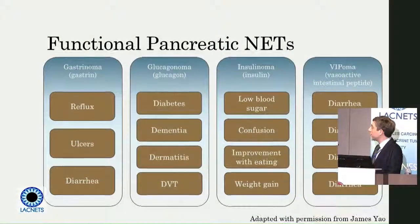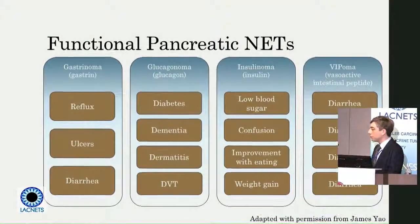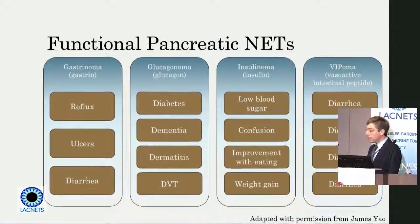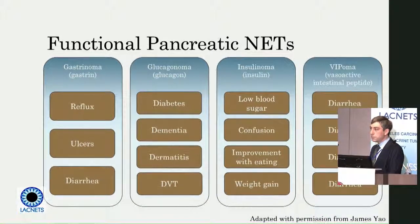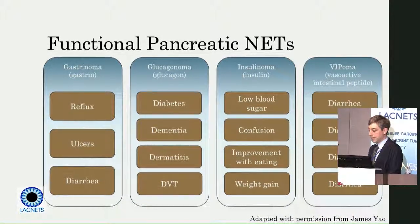A word on pancreatic neuroendocrine tumors for the sake of completeness. There are lots of different functional neuroendocrine tumors that can arise on occasion in the pancreas, and the way we often think about this is that there are various normal endocrine cells in the body, and there are lots of different kinds in the pancreas. Commonly, but not always, we would think about a functional neuroendocrine tumor as just making the native hormone that its parent cell usually does.